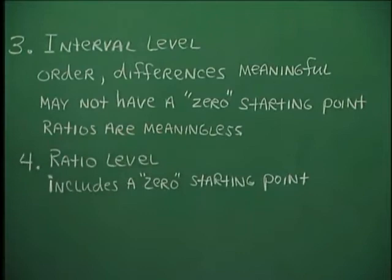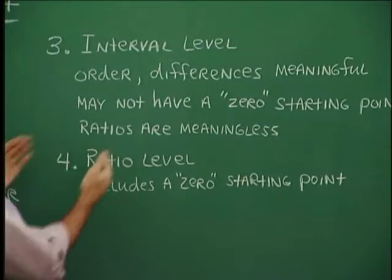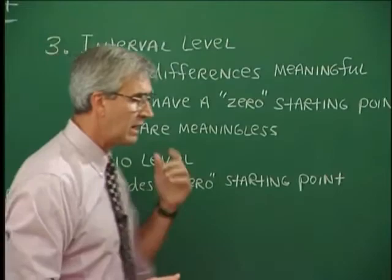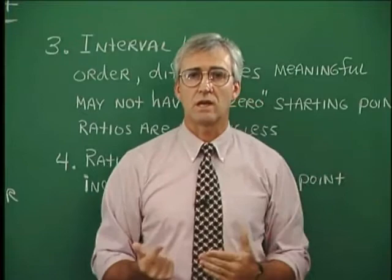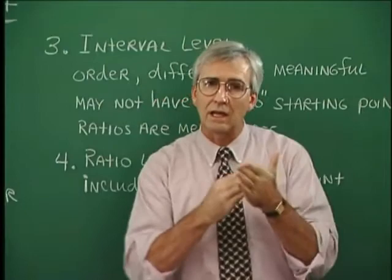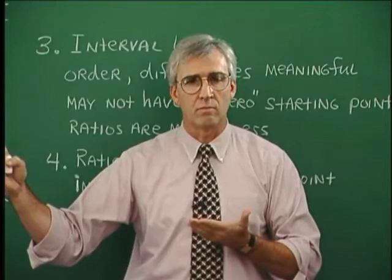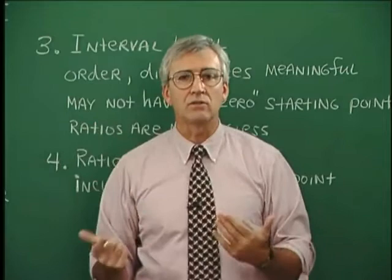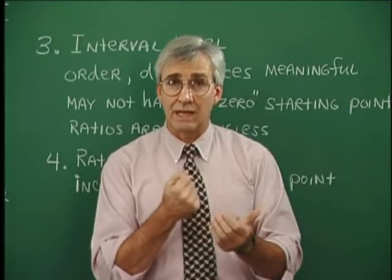With the ratio level — the highest level — it includes all of the previous ideas, and because a zero starting point is involved, ratios have great meaning. Scientists like to use temperature in Kelvin so that when they say twice as hot, they really mean twice as much heat. Distances and elapsed time also fall here — elapsed time, not dates. Money might fall into this category too: you can have zero money, and you can think about doubling and halving money. So money, distances, and elapsed time all fall into the ratio level.